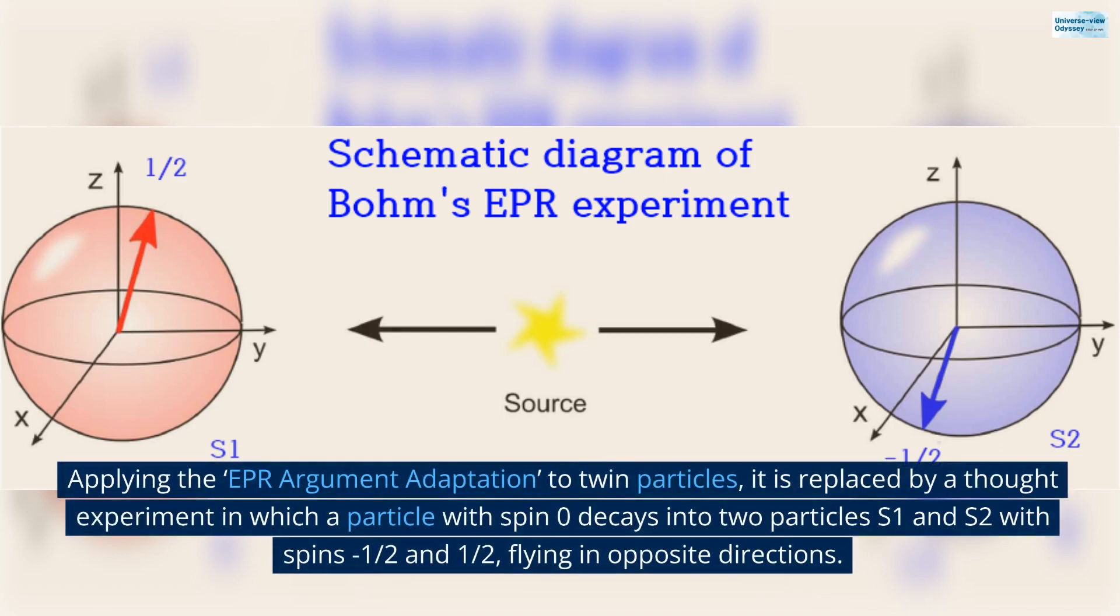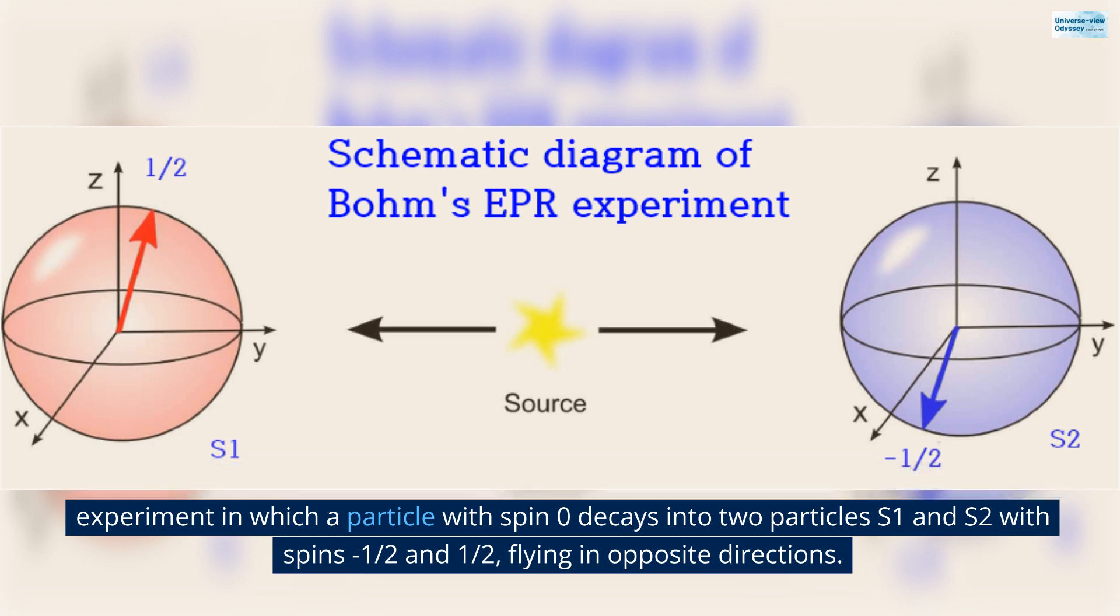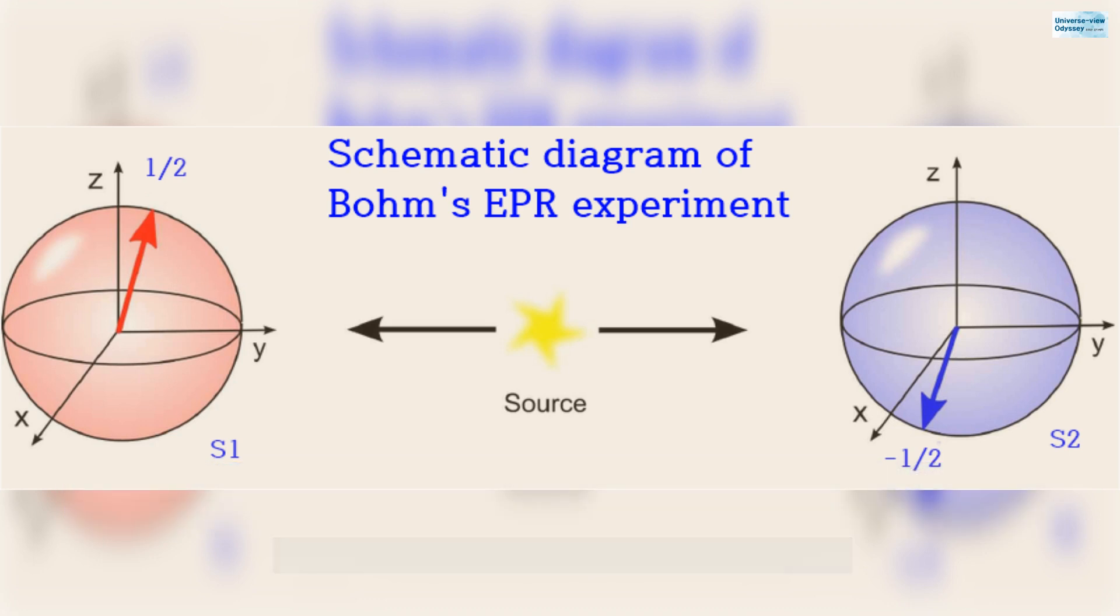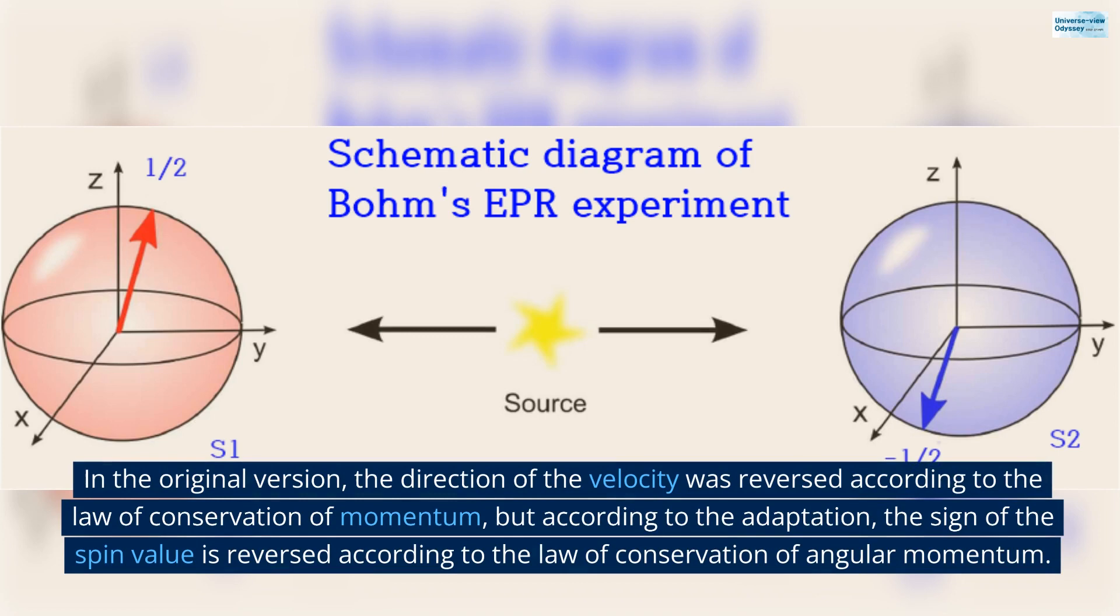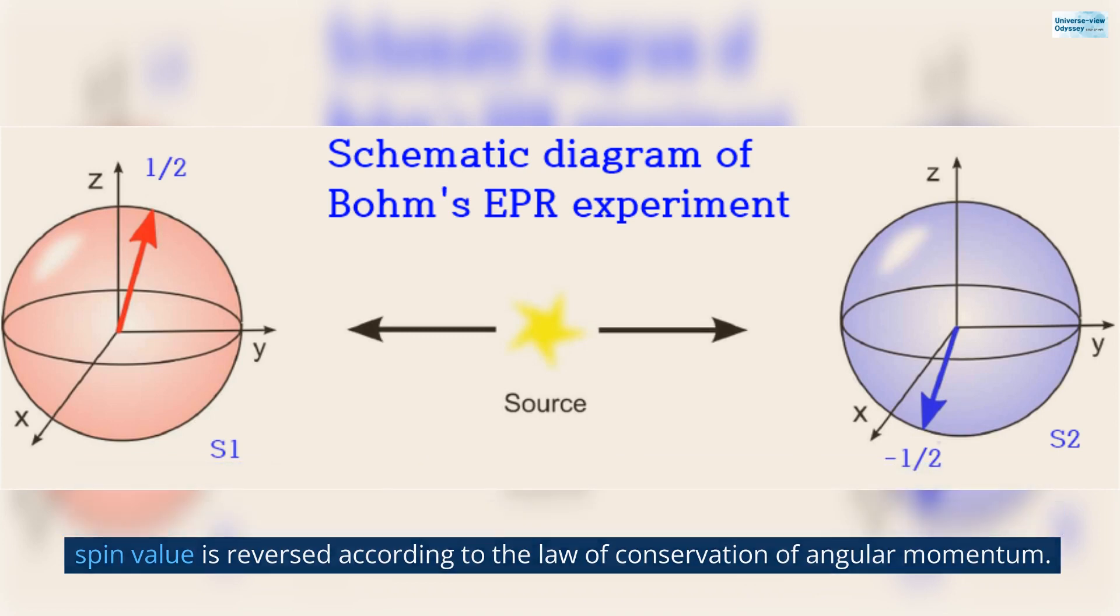Applying the EPR argument adaptation to twin particles, it is replaced by a thought experiment in which a particle with spin zero decays into two particles S1 and S2 with spins minus one half and one half, flying in opposite directions. In the original version, the direction of the velocity was reversed according to the law of conservation of momentum, but according to the adaptation, the sign of the spin value is reversed according to the law of conservation of angular momentum.